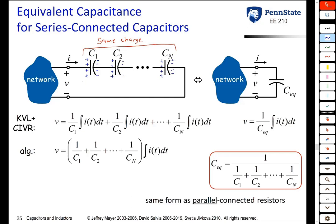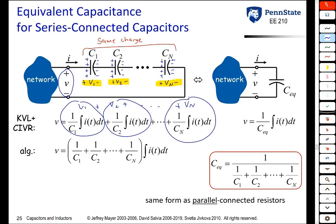Let's look at the voltage drop across each capacitor: V1, V2, all the way up to Vn. The total voltage drop is V1 plus V2 plus ... plus Vn. The voltage across a capacitor is one over its capacitance times the integral of its current. Because the capacitors are in series, they all have the same current I(t). We can factor out the integral and see that the total voltage is (1/C1 + 1/C2 + ... + 1/Cn) times the integral of I dt.